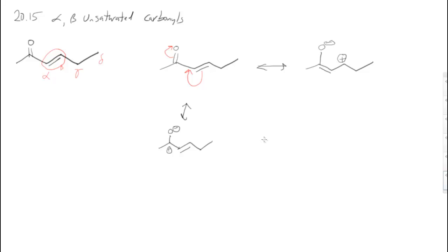So if I want to look at the hybrid of all the resonance forms, there would be a partial negative on oxygen, a partial positive on the carbonyl carbon, and a partial positive on the carbon in the beta position. And so that's going to be important when we start looking at the possible reactions that we can do. So there are two possible sites that are electrophilic. Those are both electrophilic and therefore are possible sites for nucleophilic attack.